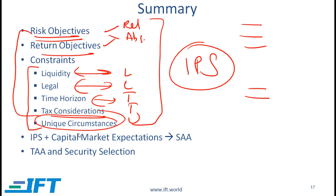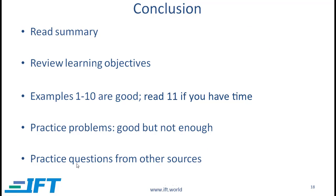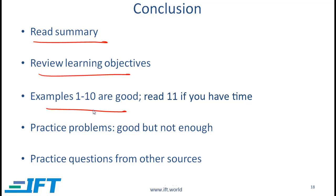We combine information from the IPS, which is investor specific, with capital market expectations to come up with an appropriate strategic asset allocation. At times we might deviate from the SAA based on our short-term view — that deviation is called tactical asset allocation — and finally we do security selection. Make sure to read the summary, review the learning objectives, read examples 1 through 10 in this reading, and do all the practice problems as well as questions from other sources.